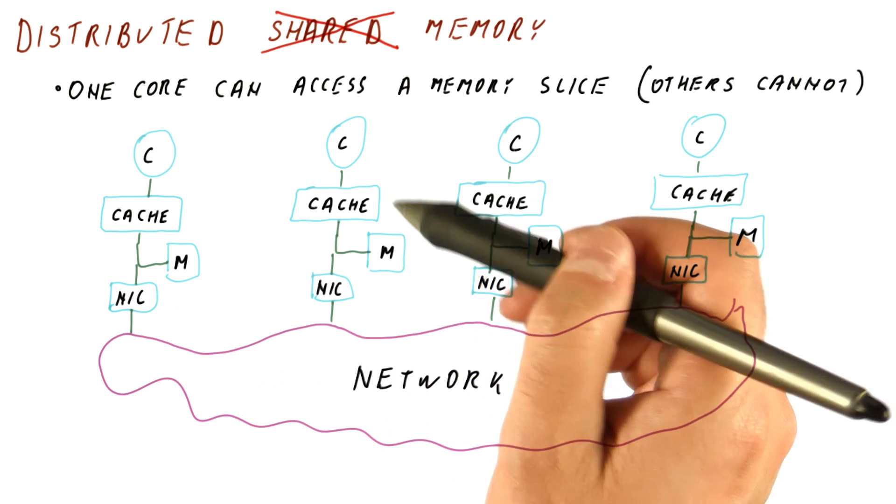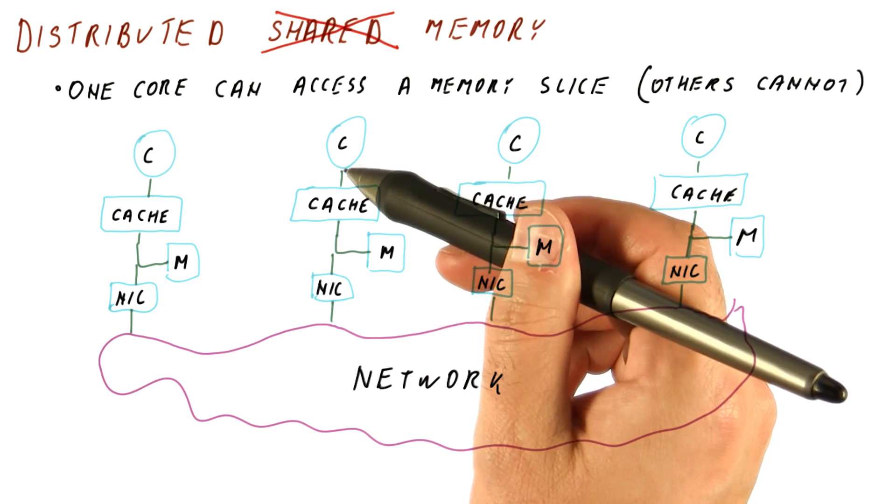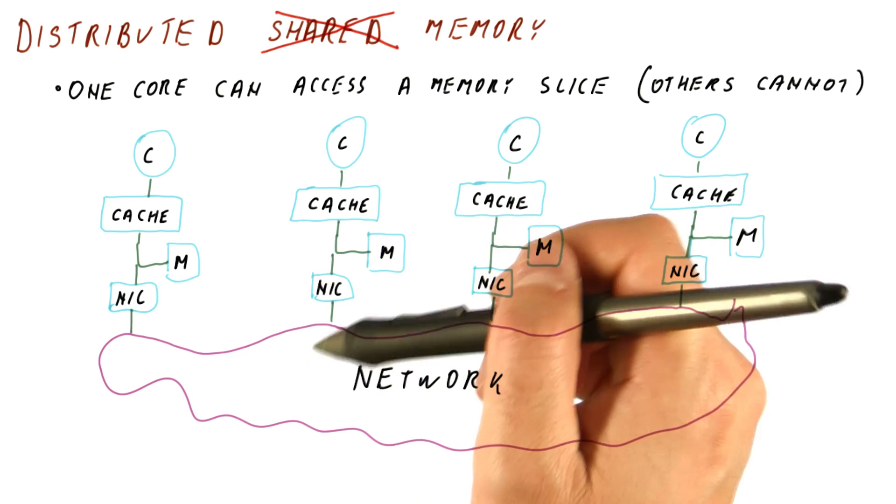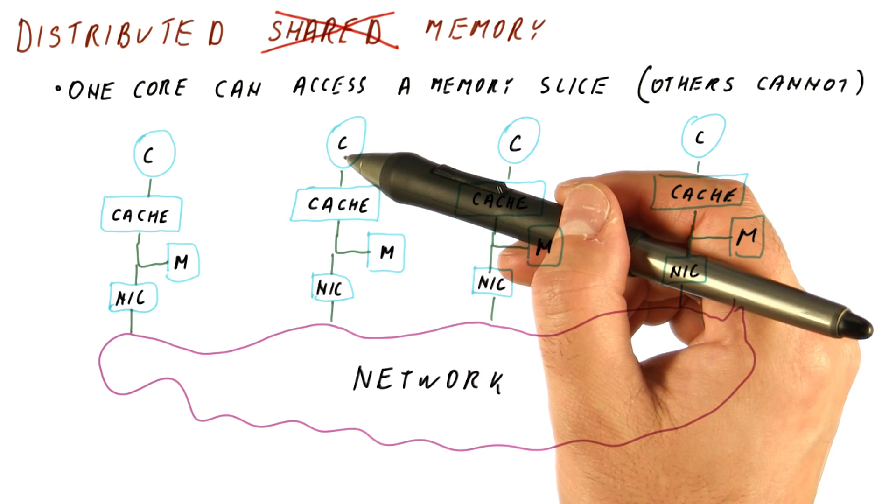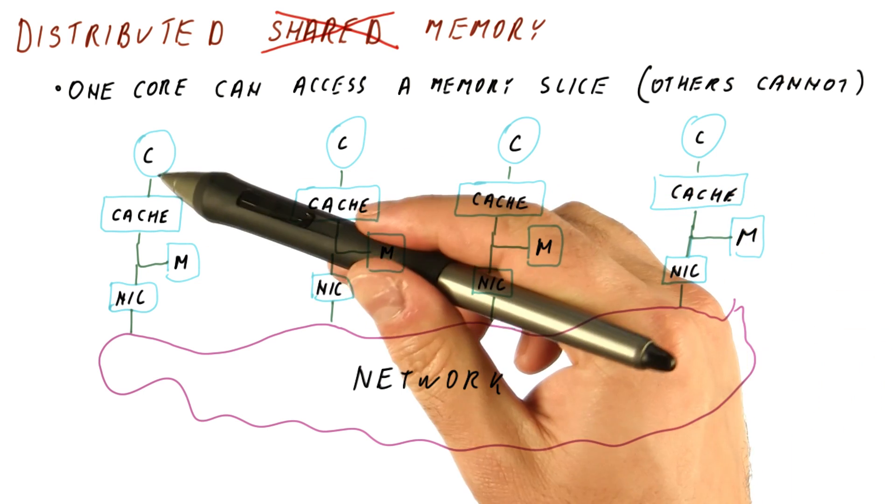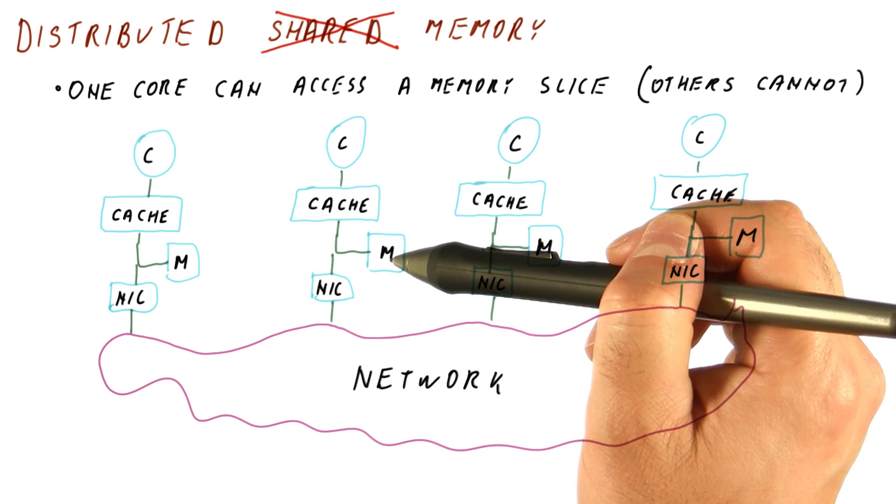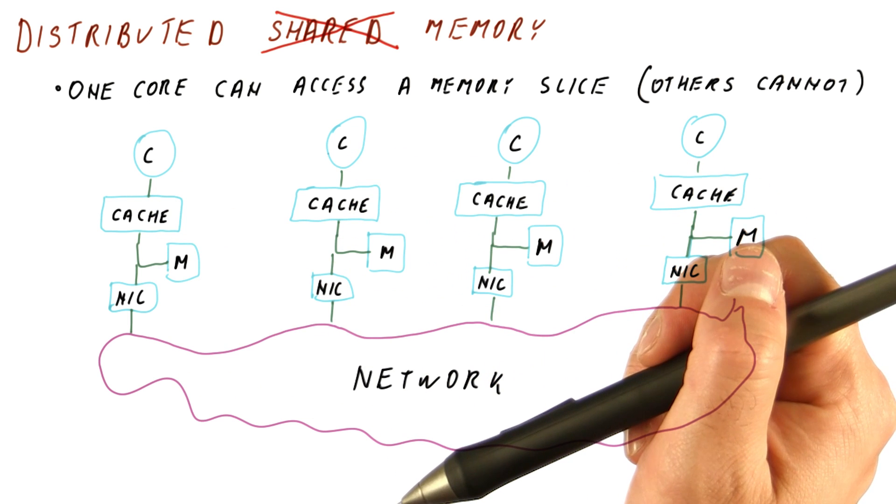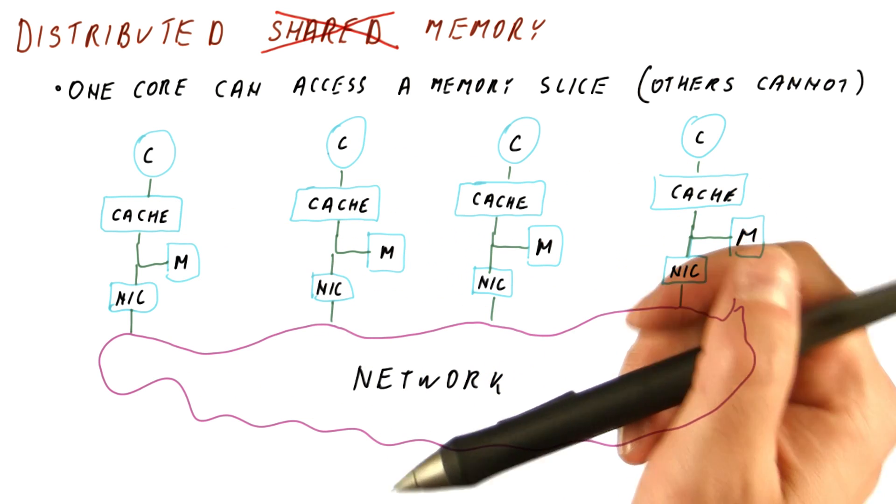The program here needs to receive that, see what is being requested, respond to it, and so on. So now communication is explicit. It's no longer sufficient to simply put the data in memory and then another core just reads it from there. You have to actually send the data explicitly to another core if we want to communicate.